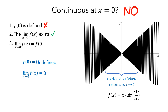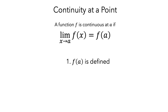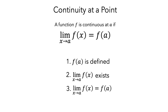To summarize what we've seen, we've seen a formal definition of continuity and used examples to explore the three conditions: that f is defined at x equals a, that the limit as x approaches a of f(x) exists, and that the limit is equal to the value of f at x equals a.